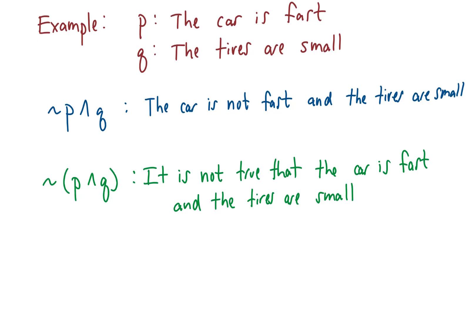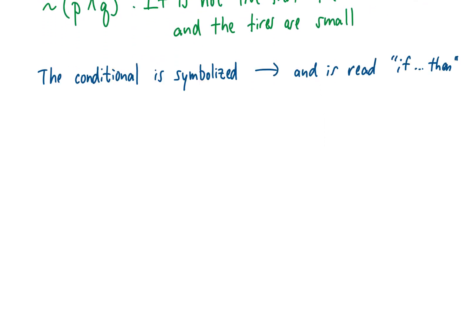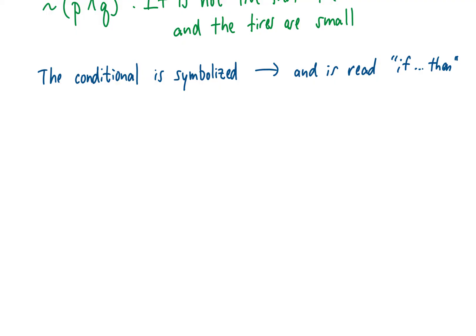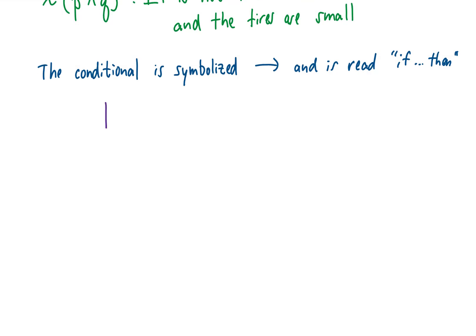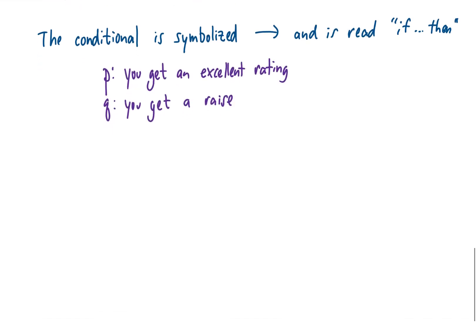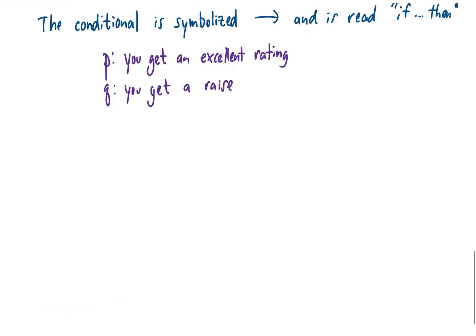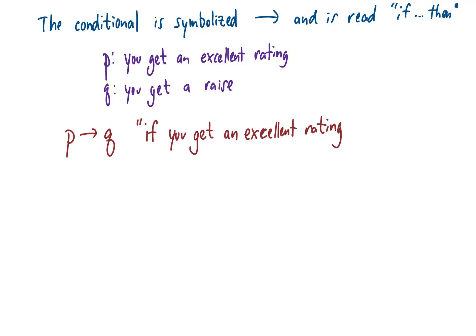We've talked about symbols for 'and' and 'or', but we have a couple more. The 'if-then' connective is symbolized by an arrow and is called a conditional. For example, letting p represent 'you get an excellent rating' and q represent 'you get a raise', p → q represents 'if you get an excellent rating, then you get a raise'.